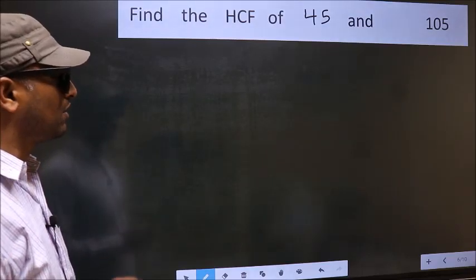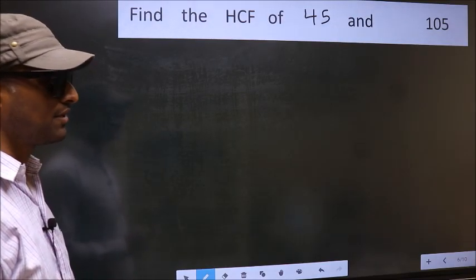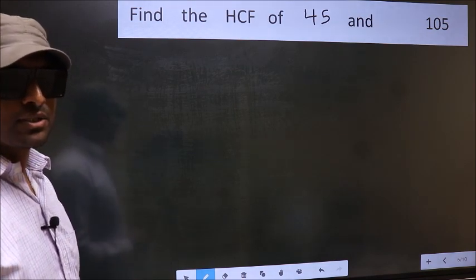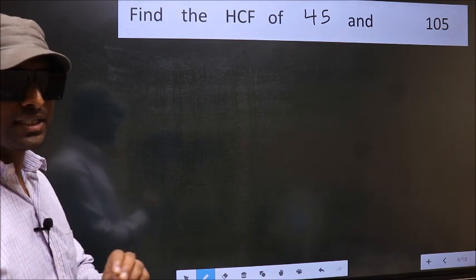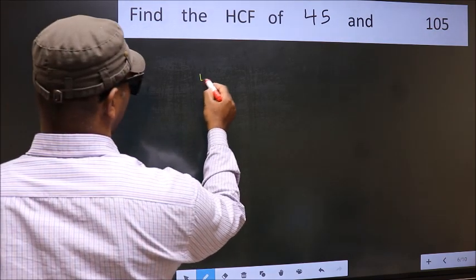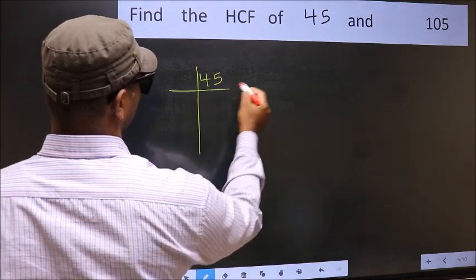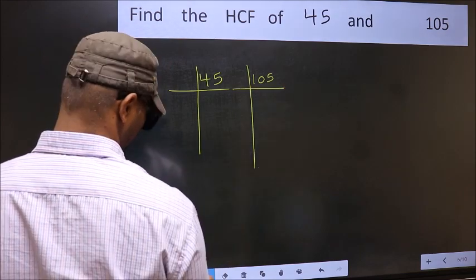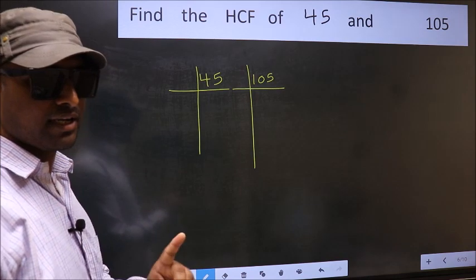Find the HCF of 45 and 105. To find the HCF, we should do the prime factorization of each number separately — that is, 45 and 105. This is Step 1.